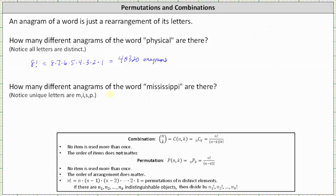Next, how many different anagrams of the word Mississippi are there? This one's a little bit different. Mississippi does have 11 letters, but notice how several of the letters appear more than once. The unique letters of Mississippi are m, i, s, and p.